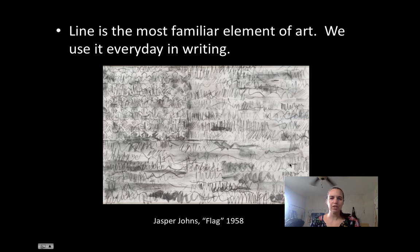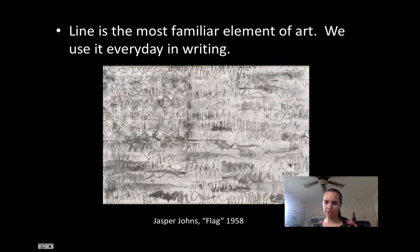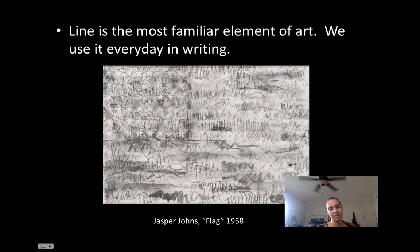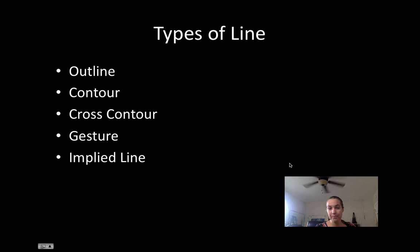Line is the most familiar art element. If I told you to sit down and draw a tree, you would immediately start drawing a line. It's what we think of when we think of drawing. We also use it in writing — as little kids we learn how to make lines and turn those lines into numbers and letters. So line is the most immediate and familiar type of art element.